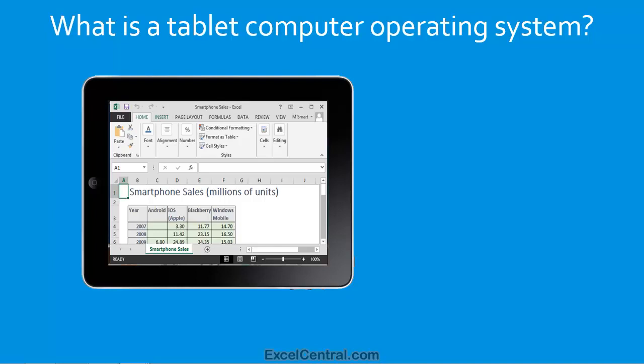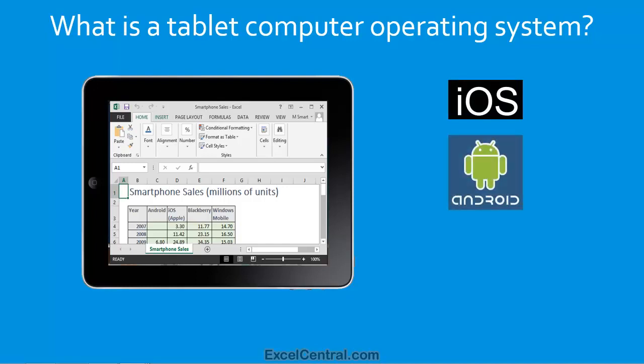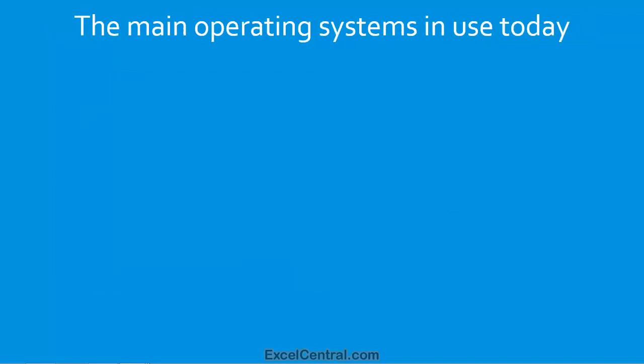Tablet operating systems are similar to their smartphone counterparts: Apple's iOS, only used on the iPad; Google's Android; and a special Windows 8 version called Windows 8 RT.